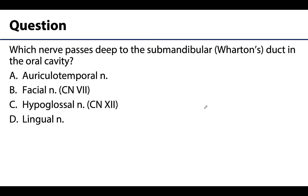The question is: which nerve passes deep to the submandibular or Wharton's duct in the oral cavity? Is it A the auriculotemporal nerve, B the facial nerve, C the hypoglossal nerve, or D the lingual nerve? We just reviewed this, so hopefully it is fresh in your mind — the correct answer is D, the lingual nerve.